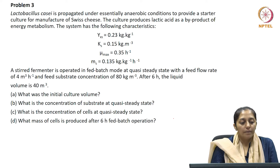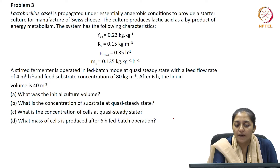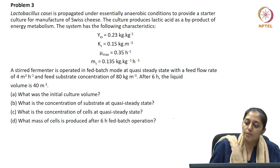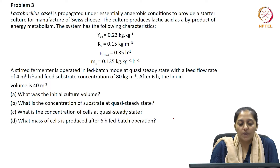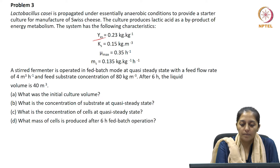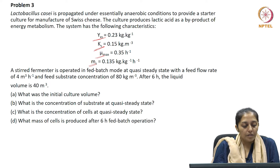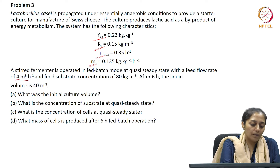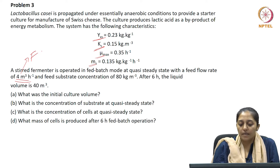Let us read problem 3. Lactobacillus Kc is propagated under essentially anaerobic conditions to provide a starter culture for manufacture of Swiss cheese. The culture produces lactic acid as a by-product of energy metabolism. The system characteristics given are: yield coefficient Yx/S, Monod saturation constant Ks, maximum specific growth rate mu max, and maintenance coefficient. A stirred fermenter is operated in fed batch mode at quasi steady state with a feed flow rate F of 4 metre cube per hour and feed substrate concentration Si of 80 kg per metre cube.